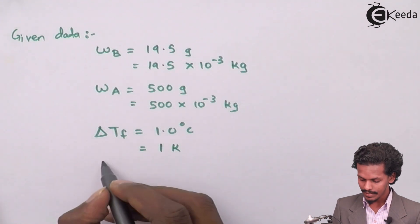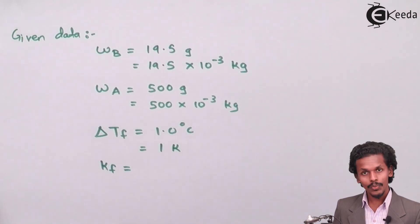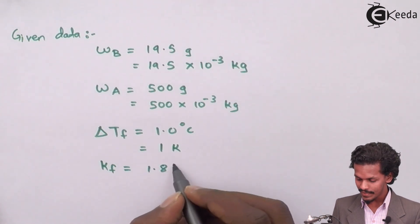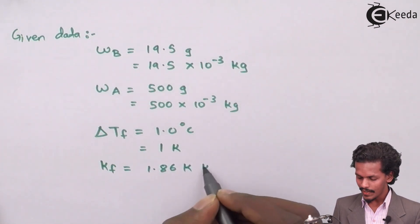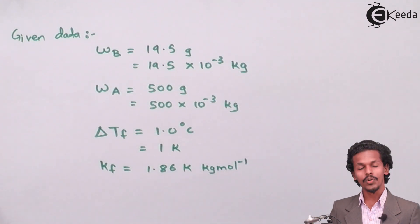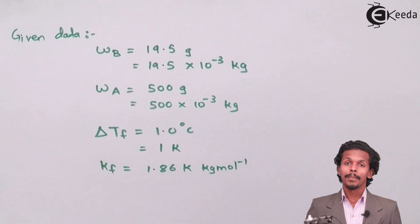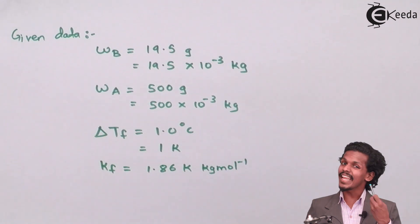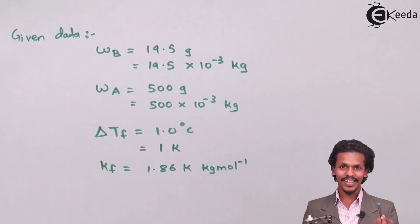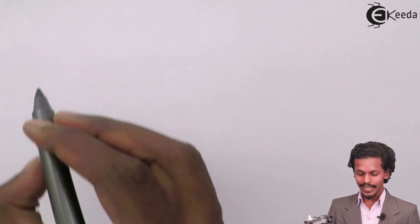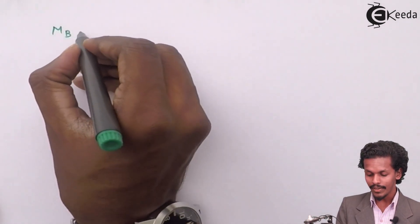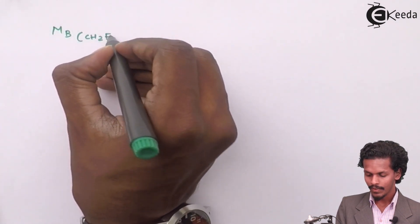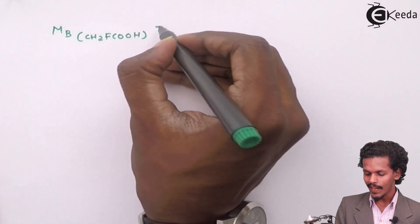The other given data: the cryoscopic constant Kf is 1.86 Kelvin kg per mole. In this case, the molar mass of the solute is not given, but we can calculate it. We need to find the molar mass of monofluoroacetic acid, which we will denote as MB.